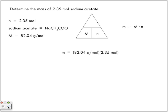So we're multiplying 82.04 grams per mole times 2.35 moles. What cancel out? What units? Moles. And our answer must be in grams. The answer you should have gotten.